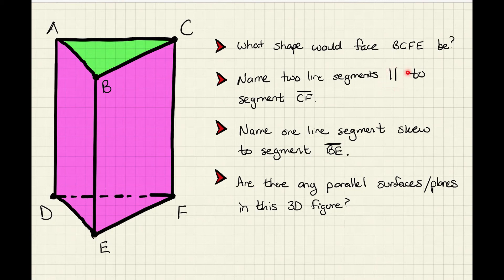Then, you need to name two line segments that are parallel to segment CF. So this segment right here. Then you need to name one line segment that is skew. So it's not parallel and it does not intersect segment BE. So that would be the front of this prism right here. And then, are there any parallel surfaces or planes in this three-dimensional figure? So in looking at this entire three-dimensional prism, are there any surfaces or planes? So not edges. Because we have parallel edges. We have an edge here that's parallel to, you know, say here. But we're talking about surfaces and planes. So is this face parallel to anything? Is this bottom triangle parallel to anything? Like those kinds of things.